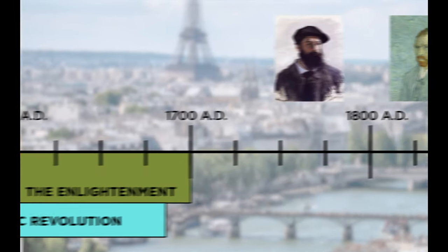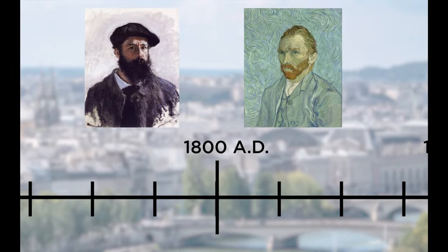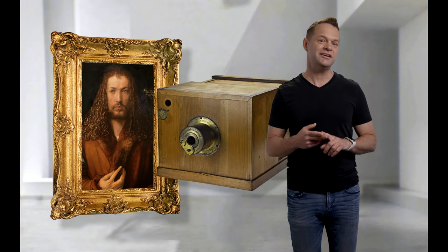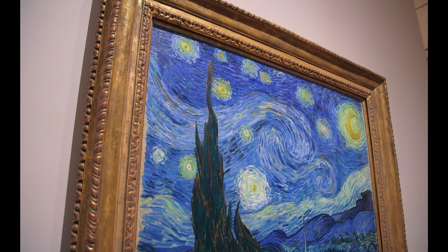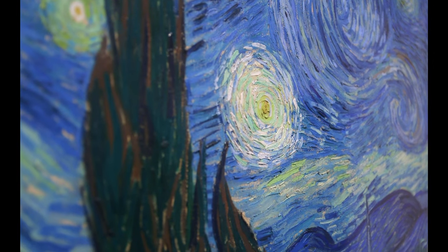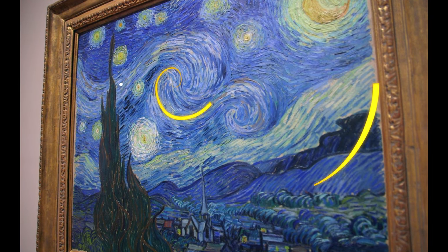Fast forward to the 1800s, during the impressionist period, where the invention of the camera and paint in tubes pushed art in a whole new direction. Artists like Van Gogh knew the power of visual balance, which is at the core of the golden ratio, and in his most famous painting, Starry Night.